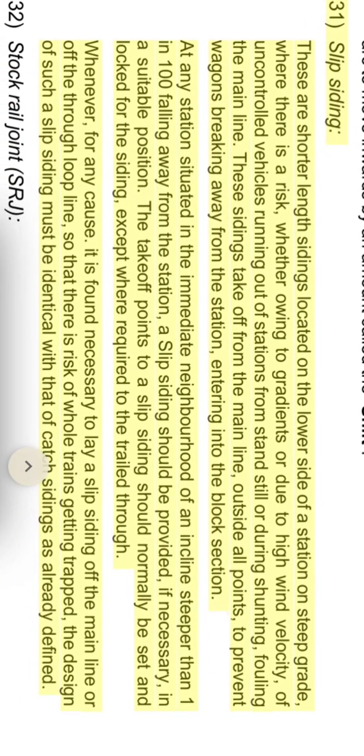Slip siding: these are shorter length sidings located on the lower side of a station on a steep grade, where there is a risk, whether owing to gradients or due to high wind velocity, of uncontrolled vehicles running out of stations from standstill or during shunting, fouling the main line. These sidings take off from the main line, outside all points, to prevent wagons breaking away from the station and entering into the block section. At any station situated in the immediate neighbourhood of an incline steeper than 1 in 100 falling away from the station, a slip siding should be provided if necessary. The take-off points to a slip siding should normally be set and locked for the siding, except where required to trail through.